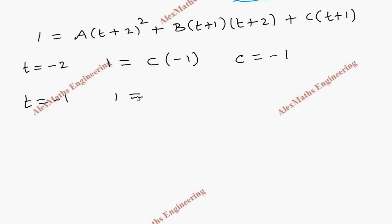When t = −1, we get 1 = A(−1 + 2)² = A(1)² = A, since the terms with (t+1) become 0. Therefore, the value of A is 1.